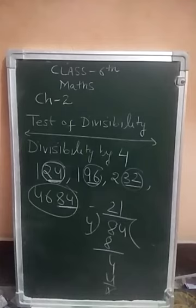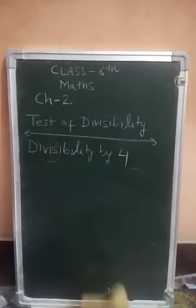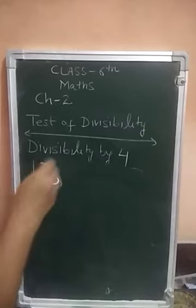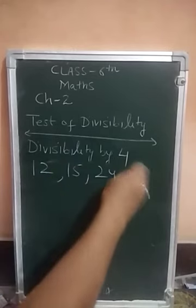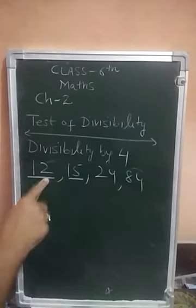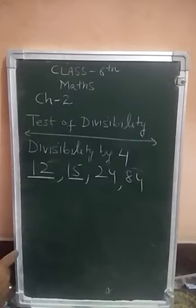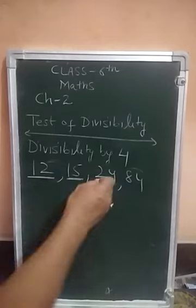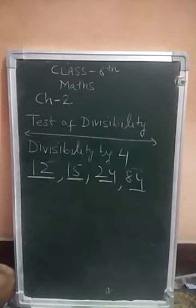Now for 2-digit numbers like 12, 15, 24, 84, you check the whole number directly. 12 is divisible by 4, 15 is not divisible by 4, 24 is divisible by 4, and 84 is divisible by 4. That is the divisibility test for 4.